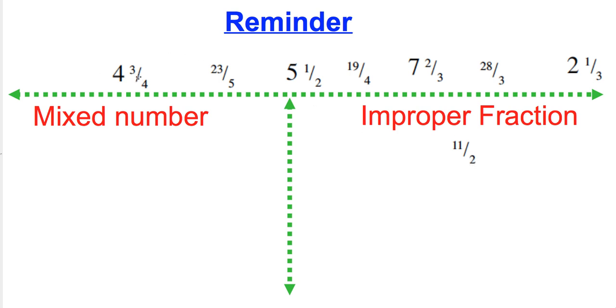4 and 3 quarters, well certainly that must be a mixed number because it's got a whole number and a fraction. 23 over 5, that's going to be an improper fraction again because the top number is bigger than the bottom number.